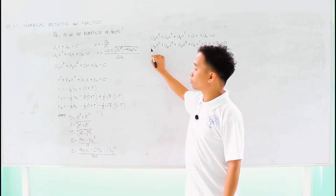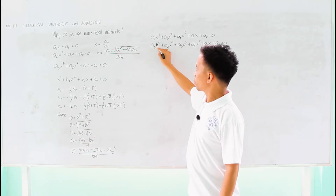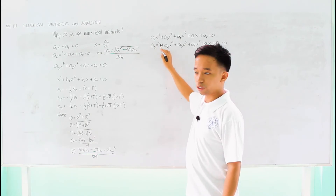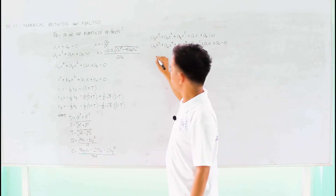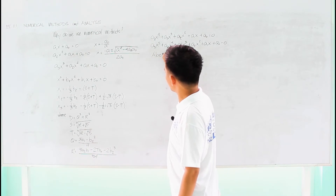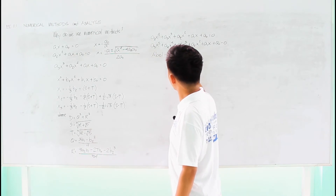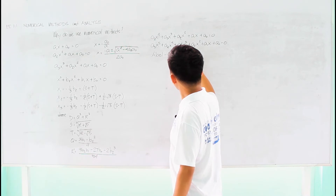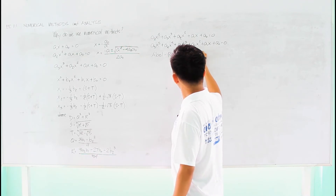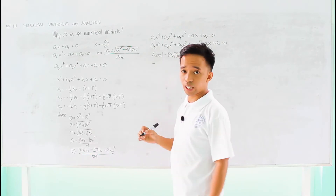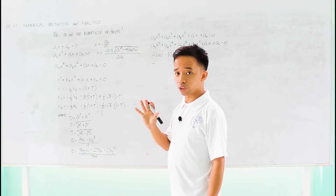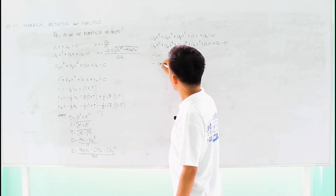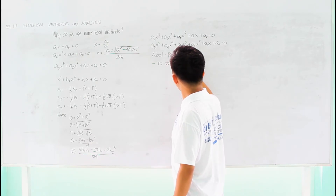In fact, when you reach the point where the degree is five or even higher, you will come up with the Abel-Ruffini theorem, which says that for this kind of equation, there is no solution in radicals.